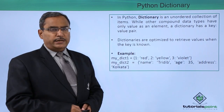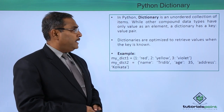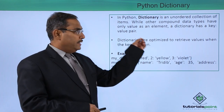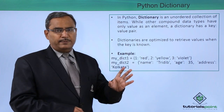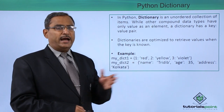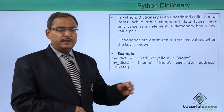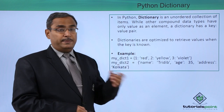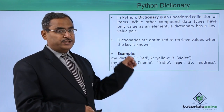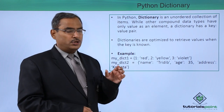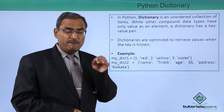In Python, a dictionary is an unordered collection of items. While other compound data types have only a value as an element, a dictionary has a key-value pair. We had discussions on list, tuple, and set where we have multiple different elements. But dictionary is quite different because it has key-value pairs.